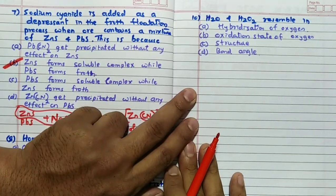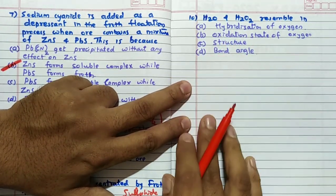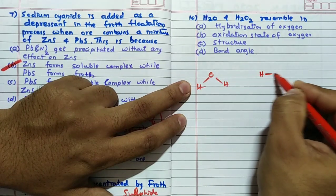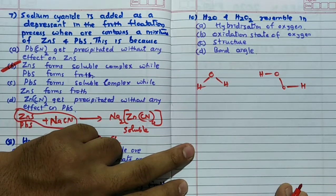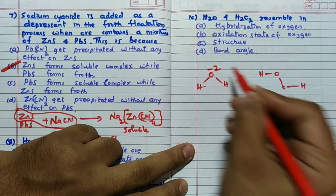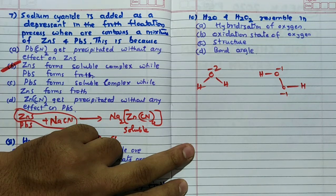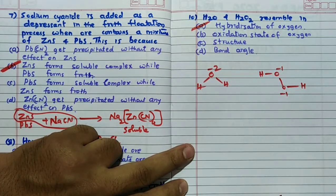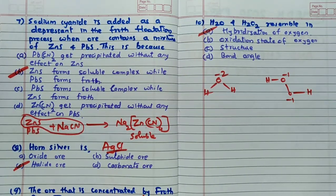H2O and H2O2 resembles in: whether bond angle no, because water is having structure like this, H2O2 having structure like this open book like structure. Bond angles are not same, structure definitely different, oxidation state of the oxygen this is minus 2, here it is minus 1, that is also different. But hybridization is sp3, hybridization is same for these. Resembles in hybridization.